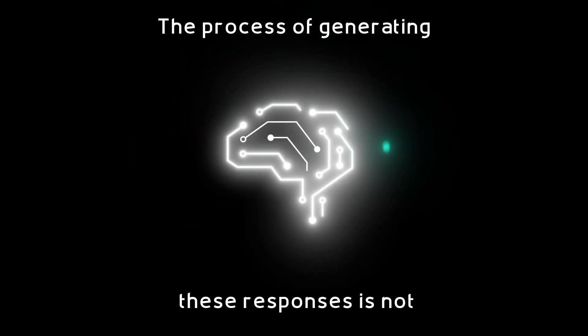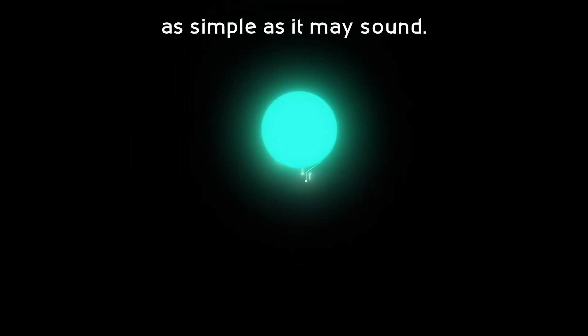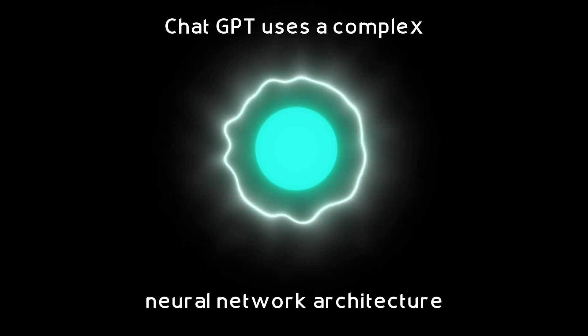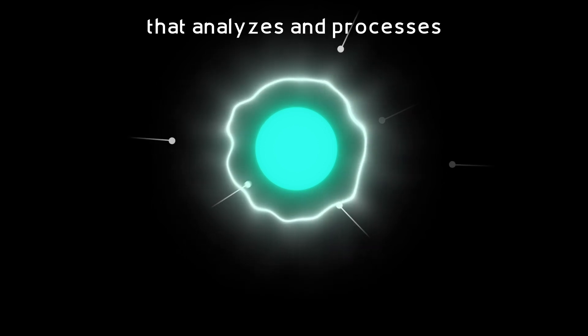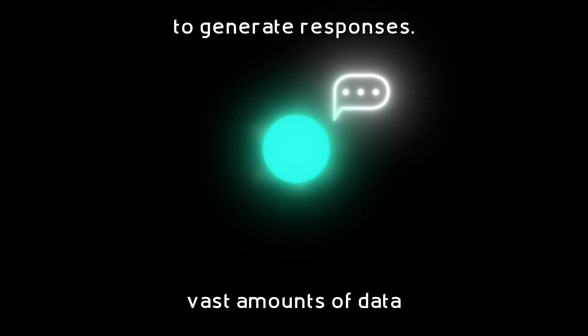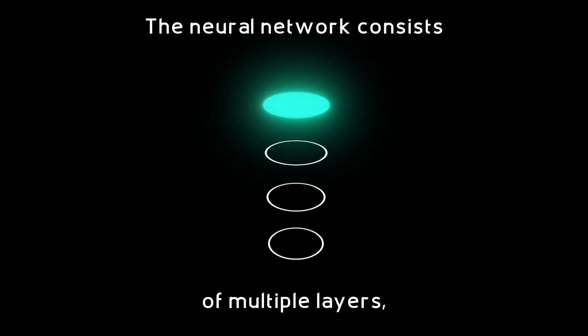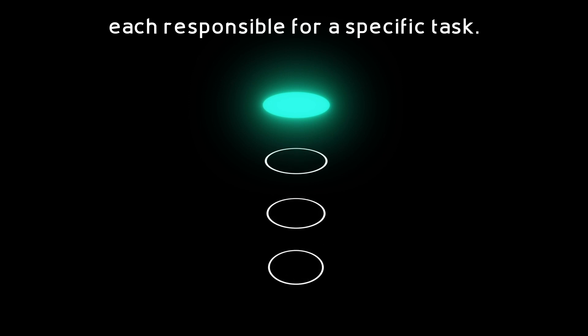The process of generating these responses is not as simple as it may sound. ChatGPT uses a complex neural network architecture that analyzes and processes vast amounts of data to generate responses. The neural network consists of multiple layers, each responsible for a specific task.